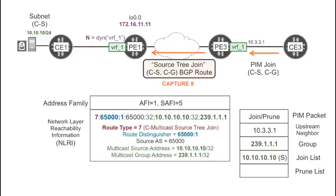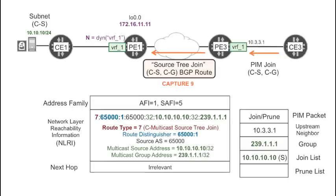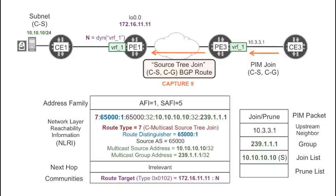This route contains no information about the originating PE — it's like an anonymous subscription for a multicast group and source. The key element of this route is the route target, which has two parts.